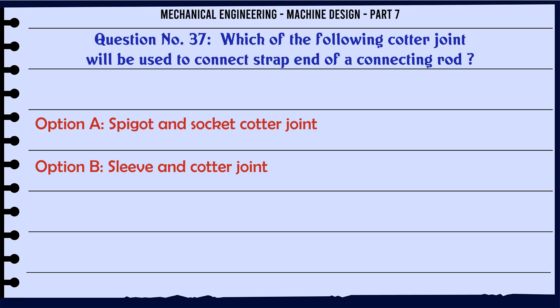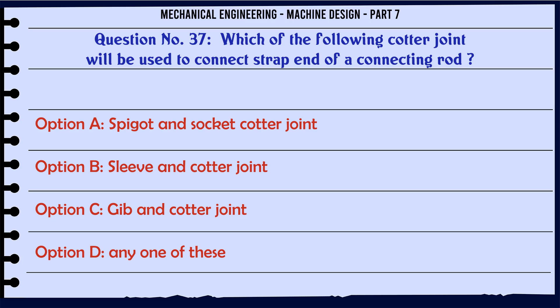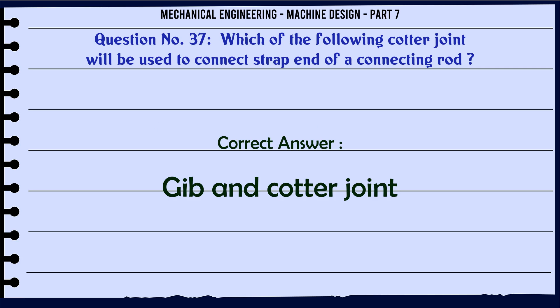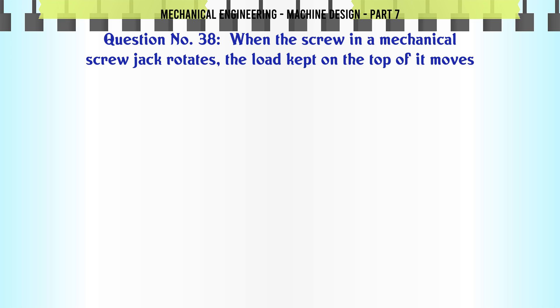Which of the following cotter joint will be used to connect the strap end of a connecting rod? a) Spigot and socket cotter joint, b) sleeve and cotter joint, c) jib and cotter joint, d) any one of these. The correct answer is: jib and cotter joint.